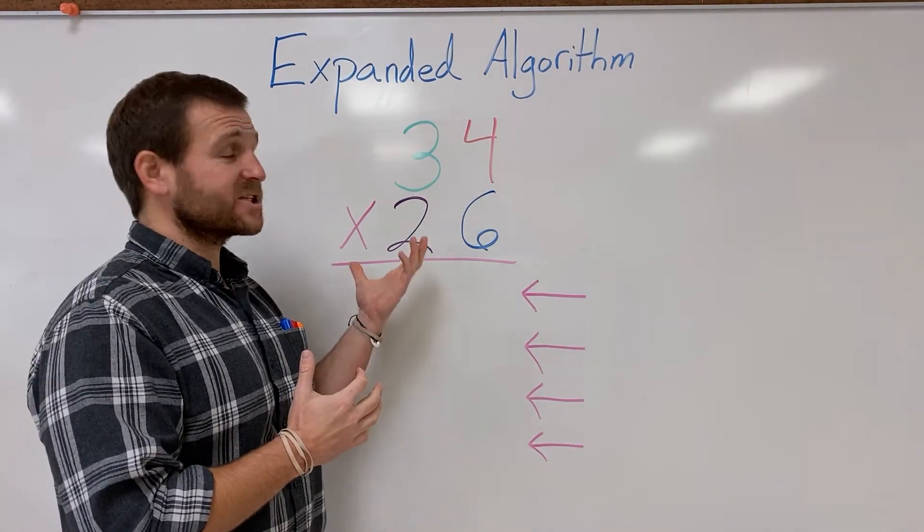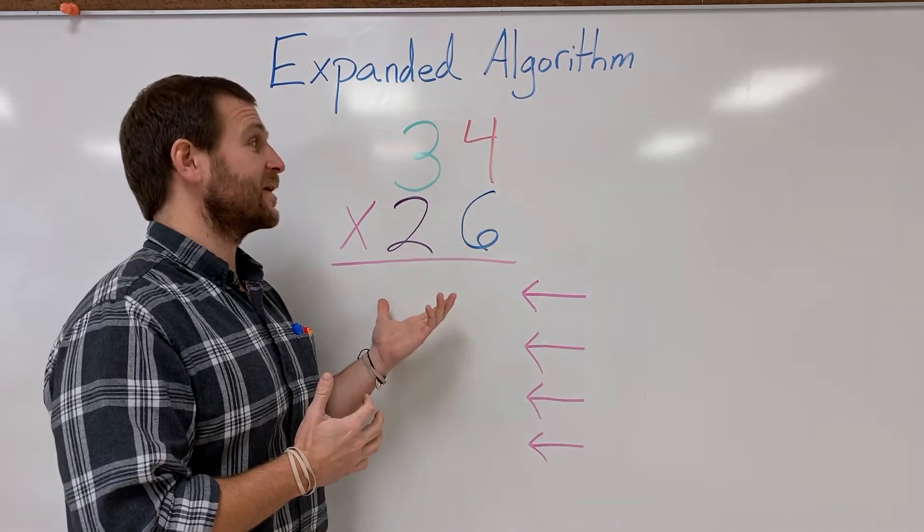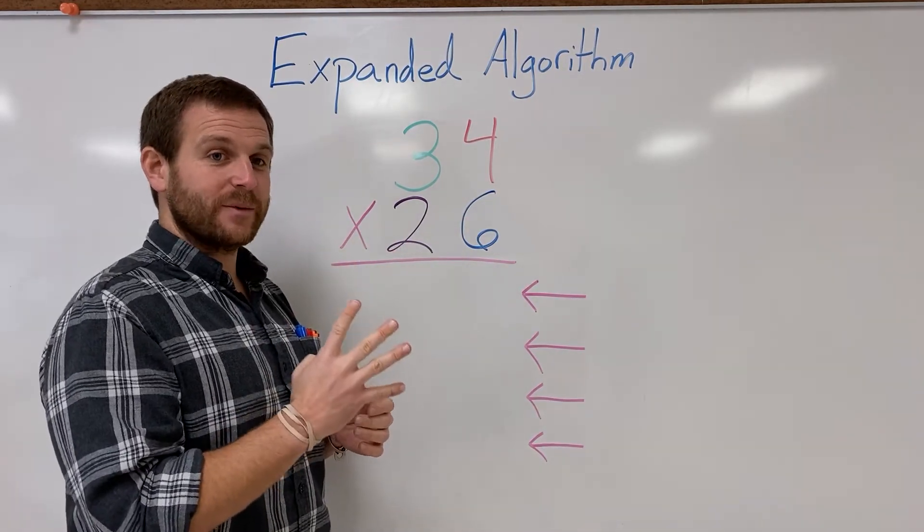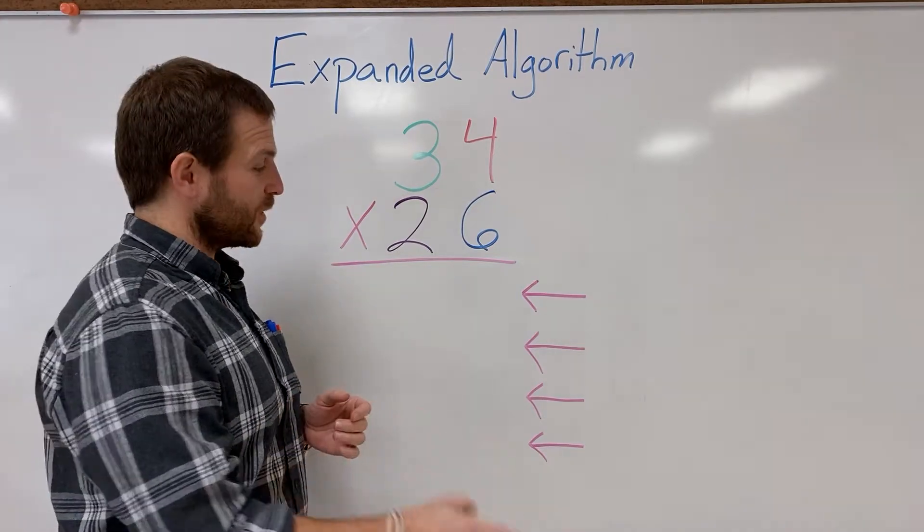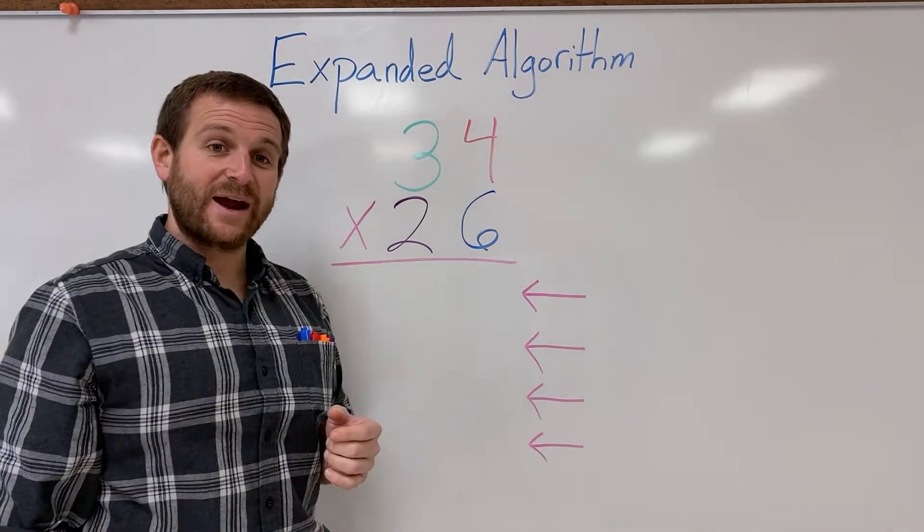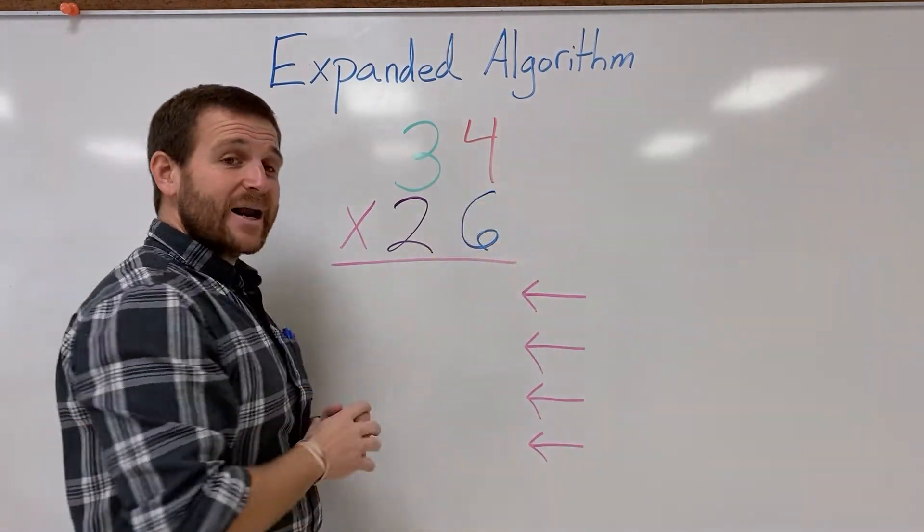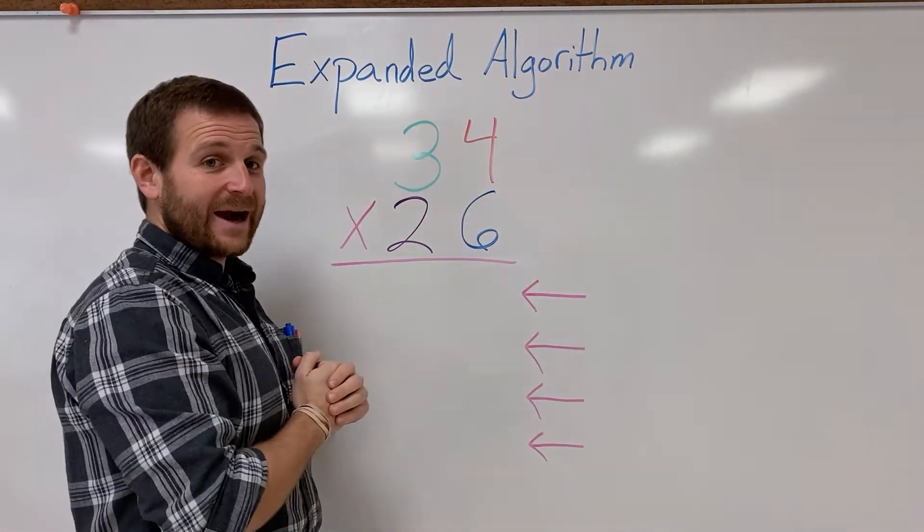First things first, when we're doing expanded algorithm with double digit times double digit, we're gonna be doing four different multiplication problems and we're gonna get four partial products. So you can see that I labeled all those with arrows here. Now the way I like to start it is I like to start from my bottom right corner and start multiplying out from there.